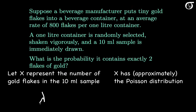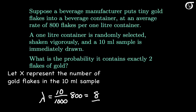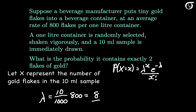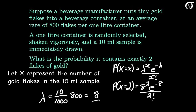Lambda is the mean number of flakes in the given volume. We're sampling 10 milliliters from a 1000-milliliter bottle — one hundredth of the liquid — and each bottle contains on average 800 flakes, so a 10-milliliter sample contains on average 8 flakes. Using the Poisson PMF, the probability x equals 2 is lambda of 8 raised to the second power times e to the minus 8, all over 2 factorial. Rounded to 4 decimal places, that's 0.0107 — about a 1% chance of getting exactly 2 flakes.